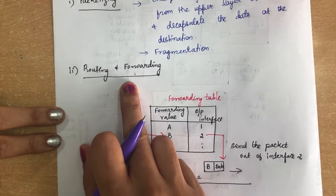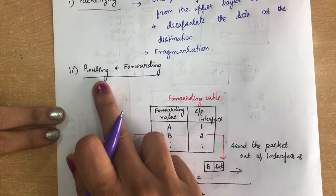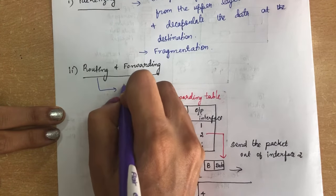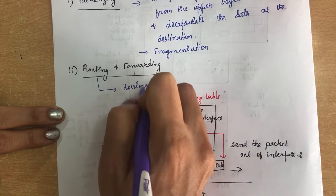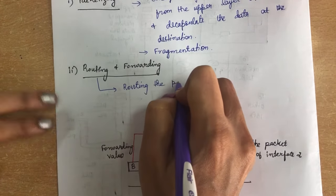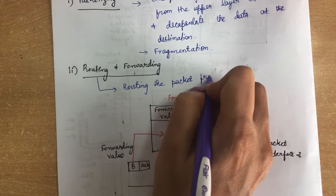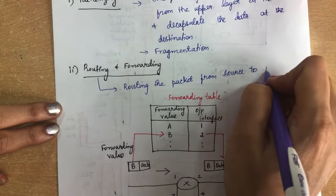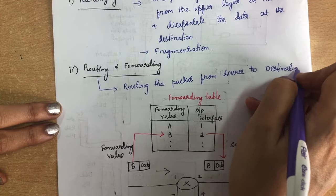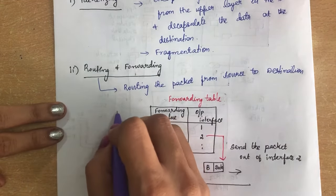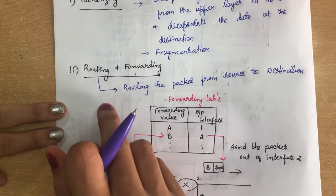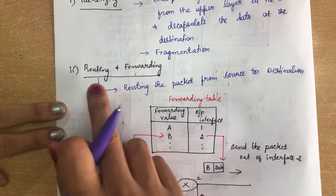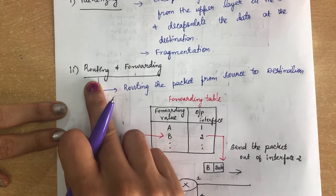The next service provided by the network layer is routing. Routing means directing packets from the source to the destination. There may be many routes available, and the network layer is responsible for finding the best route among the available ones.